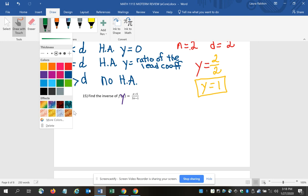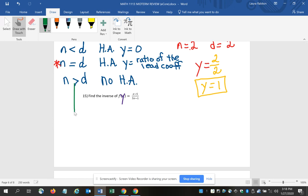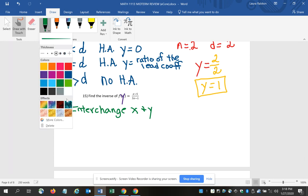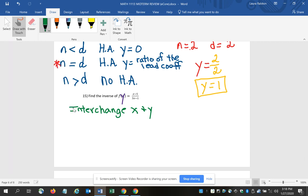I do that because it makes it a little bit easier when you're solving the problem to use y than f of x. The first step to find the inverse is you want to interchange x and y, meaning basically wherever there's an x, you want to put a y and wherever there's a y, you want to put an x.